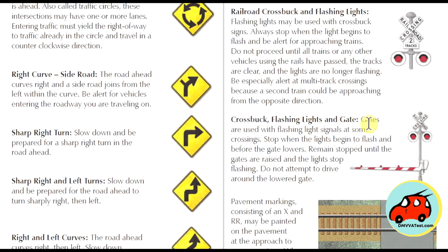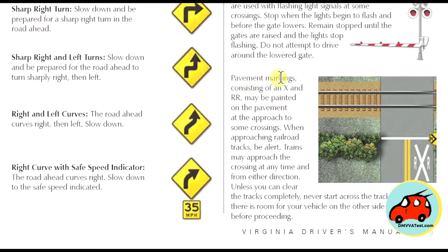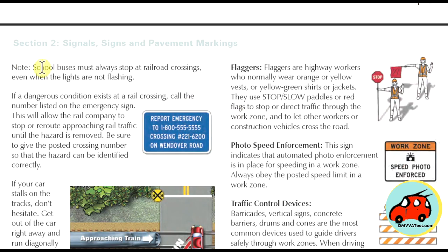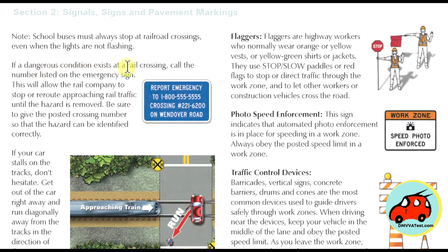Cross buck, flashing lights, and gates: gates are used with flashing light signals at some crossings. Stop when the lights begin to flash and before the gate lowers. Remain stopped until the gates are raised and the lights stop flashing. Do not attempt to drive around the lowered gates. Pavement markings of an X and RR may be painted on the approach to some crossings. When approaching railroad tracks, be alert because trains may be approaching from either direction at any time. Never start across the tracks unless you can clear them completely — make sure there's enough room for your vehicle on the other side. If a dangerous condition exists at a rail crossing, call the number on the emergency sign so the rail company can stop and reroute approaching traffic until the hazard is removed. Give the posted crossing number so the hazard can be identified correctly.